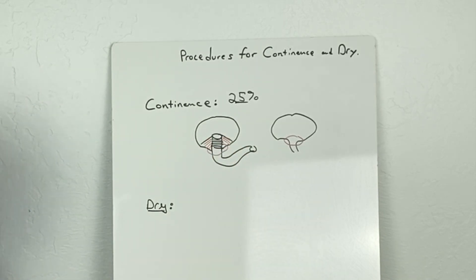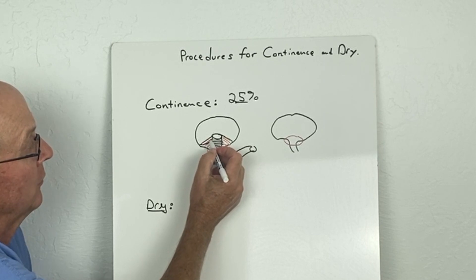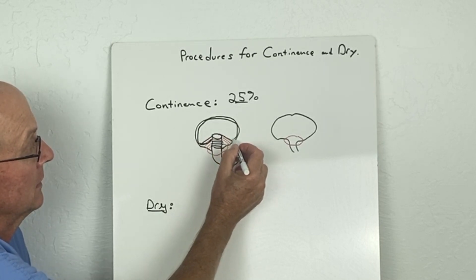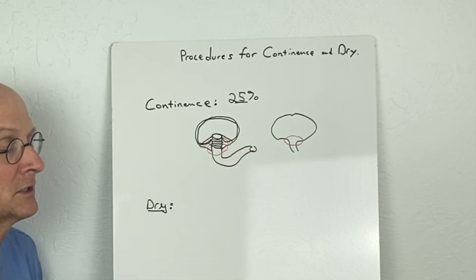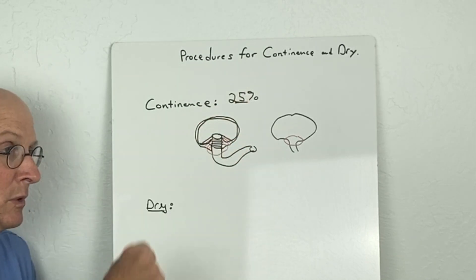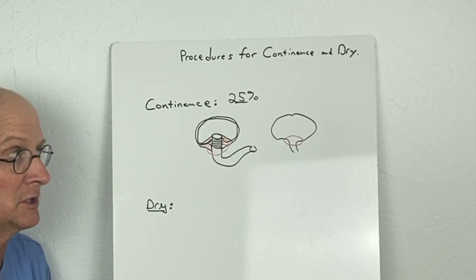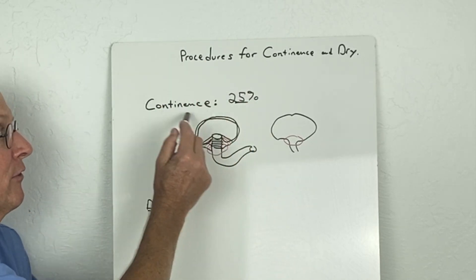We rebuild this and now we have a new bladder with a little bit smaller capacity, but we have a sphincter muscle. Hopefully that sphincter muscle would allow continence—that would be the ultimate goal. But again, only 25% are going to achieve that.